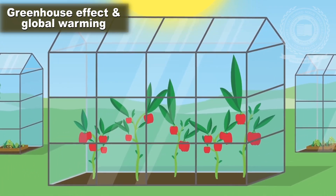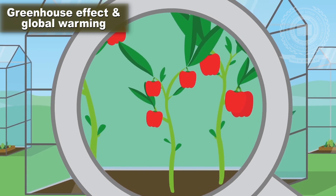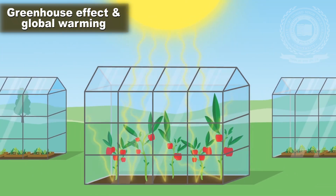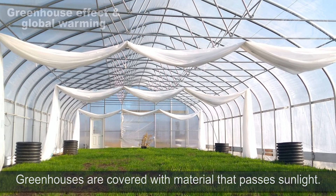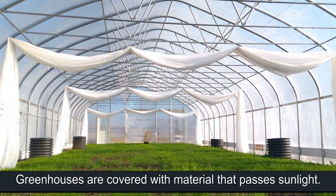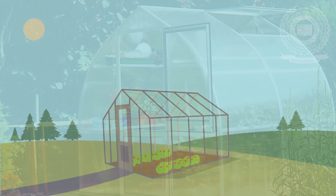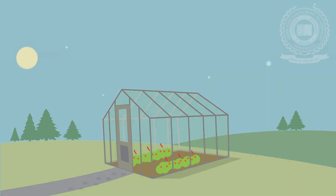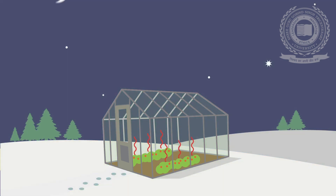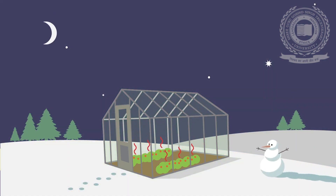The greenhouse effect of the atmosphere is named by analogy to greenhouses which become warmer in sunlight. A greenhouse is built of any material that passes sunlight, usually glass or plastic. The sun warms the ground and contents inside just like outside, and these then warm the air. Outside, the warm air near the surface rises and mixes with cooler air aloft, keeping the temperature lower than inside, where the air continues to heat up because it is confined within the greenhouse.